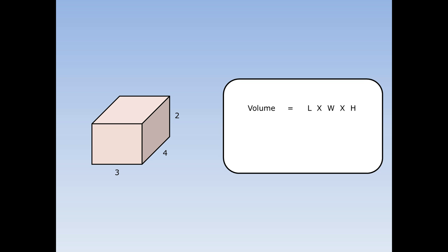To find the volume of this cuboid, first I write out the formula: volume equals length times width times height. Then I fill in the numbers. The length is four, the width is three, and the height is two. Four times three times two is twenty-four, so the volume of this cuboid is twenty-four centimetres cubed.